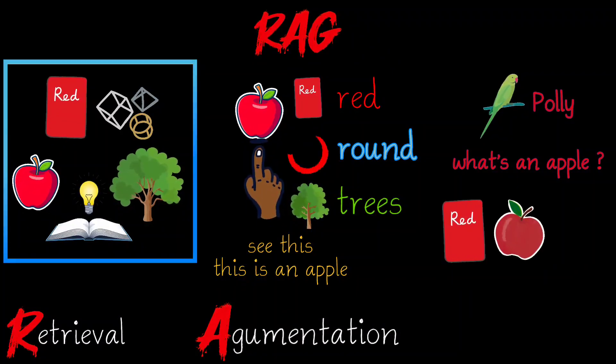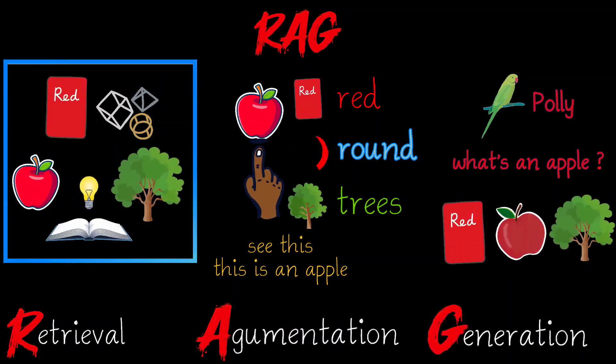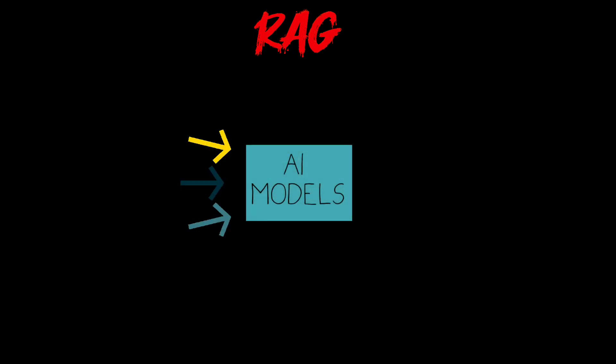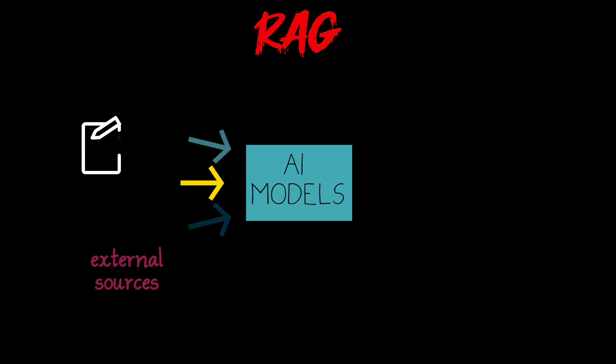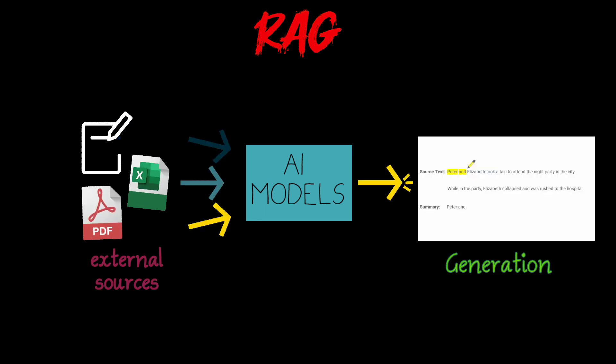'An apple is a red, round fruit that grows on trees' — that is the generation. This is similar to how RAG works with AI models, providing them with additional information from external sources so they can generate more comprehensive and accurate responses.